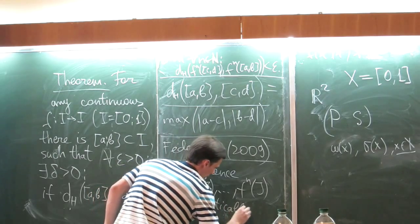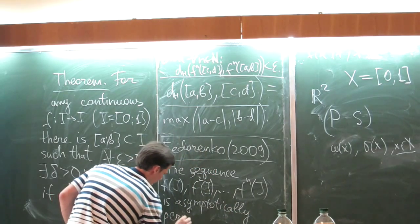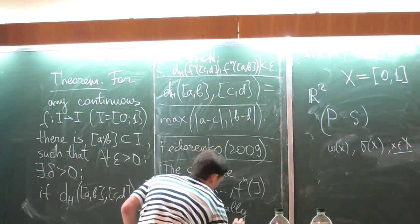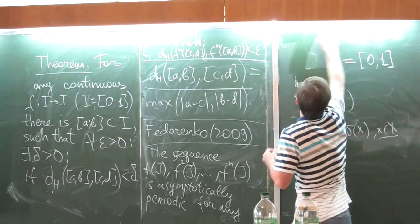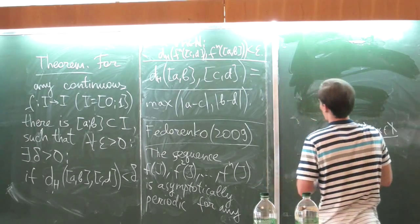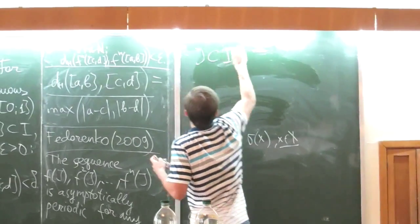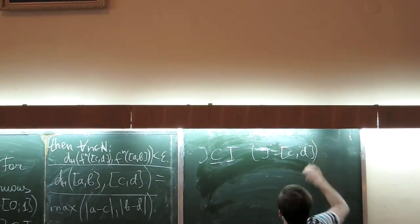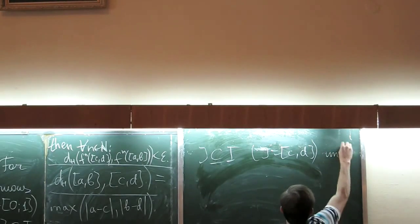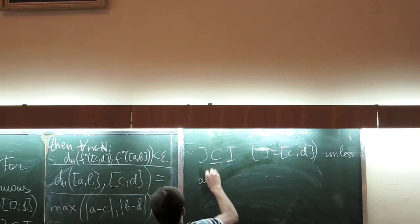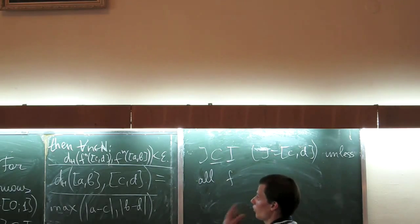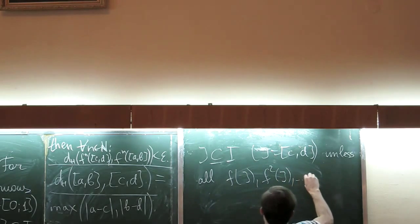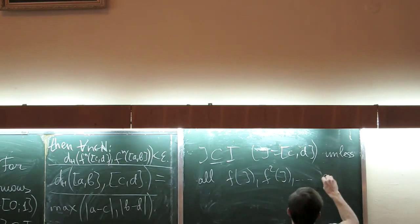The sequence F([A,B]), F²([A,B]), F³([A,B]) and so on, F^N([A,B]) is asymptotically periodic for any [A,B] which is a subset of I, unless all F^J([A,B]) are disjoint.